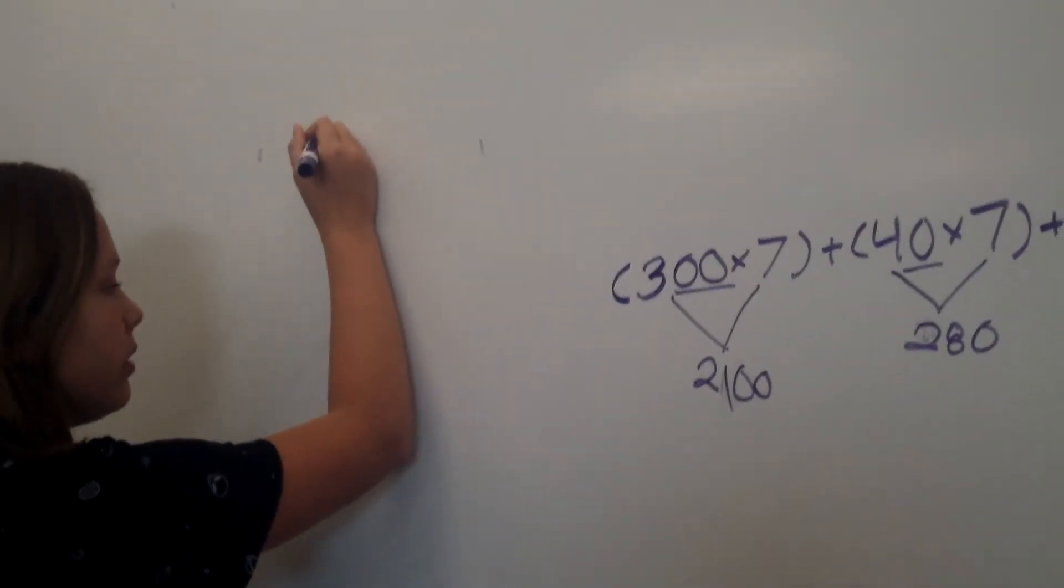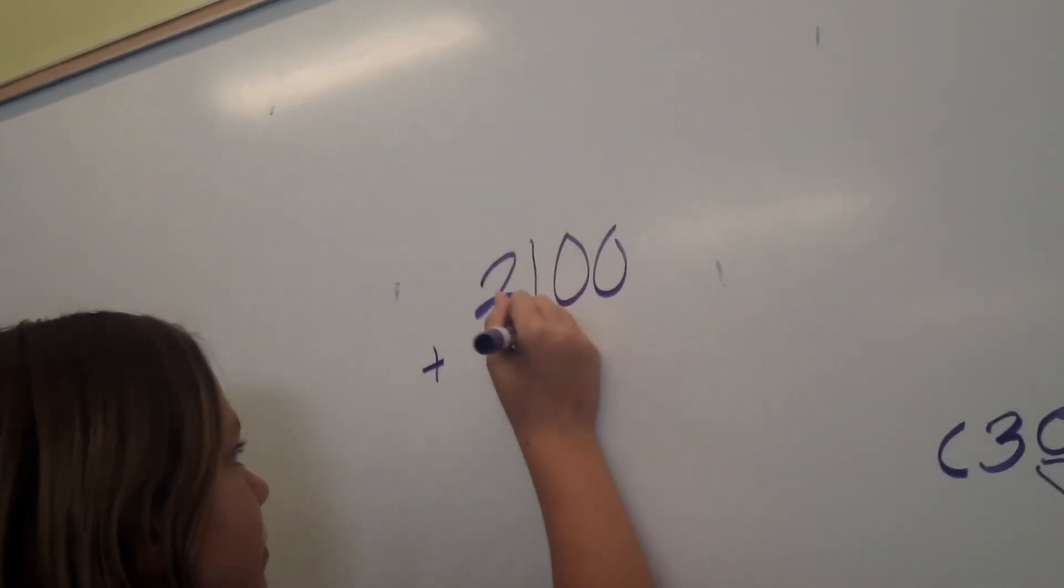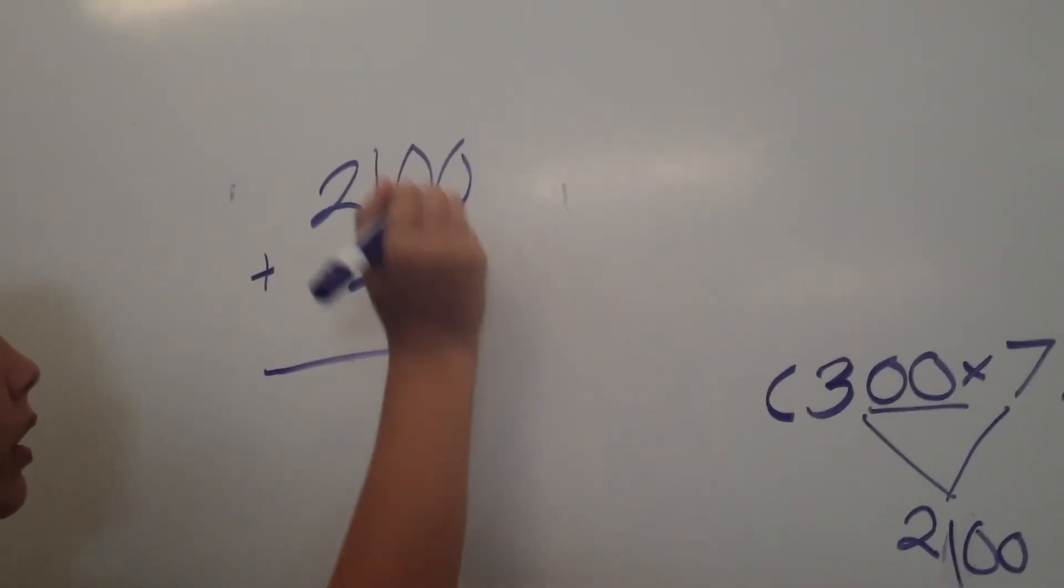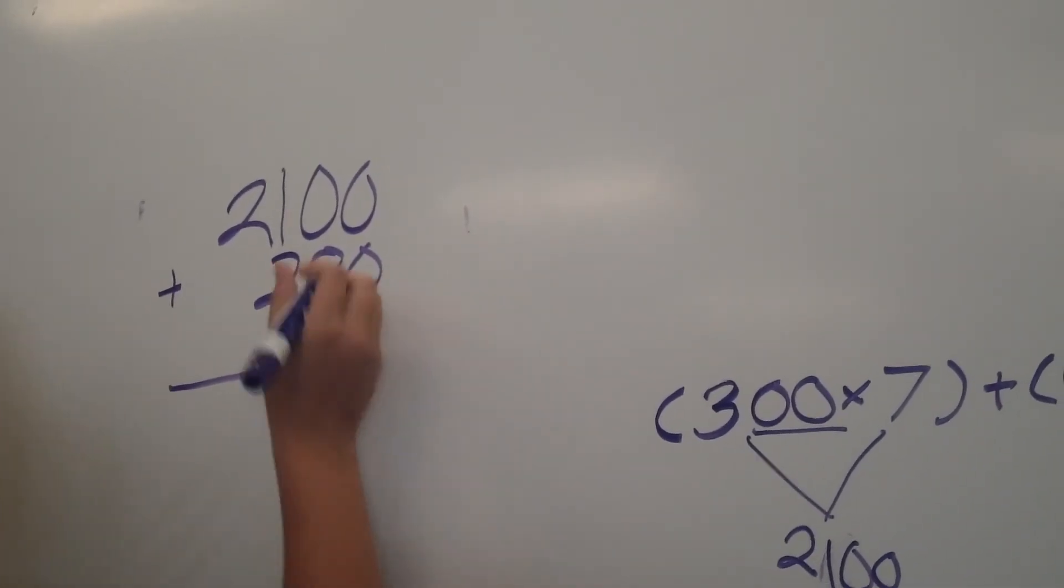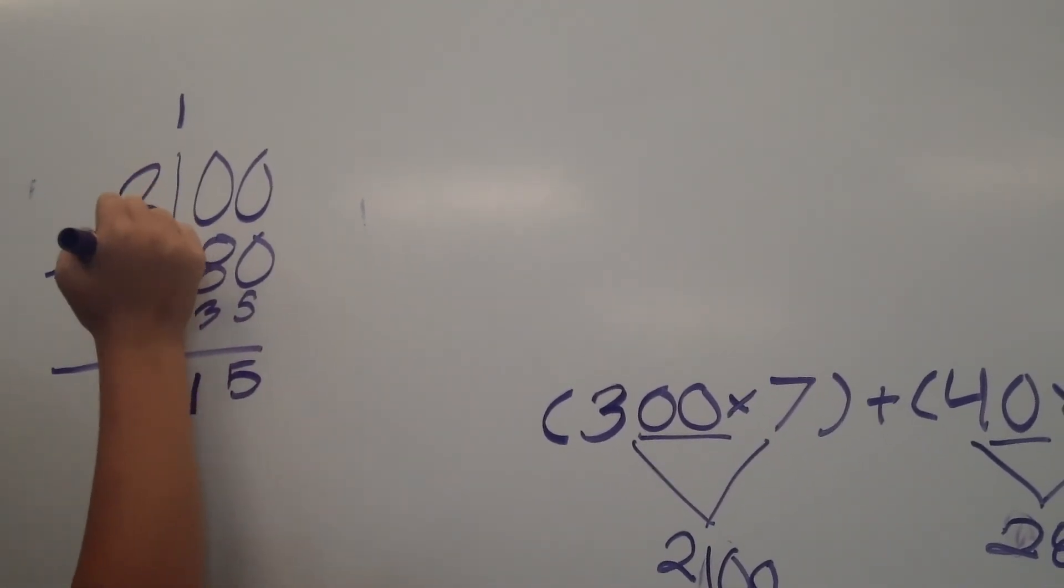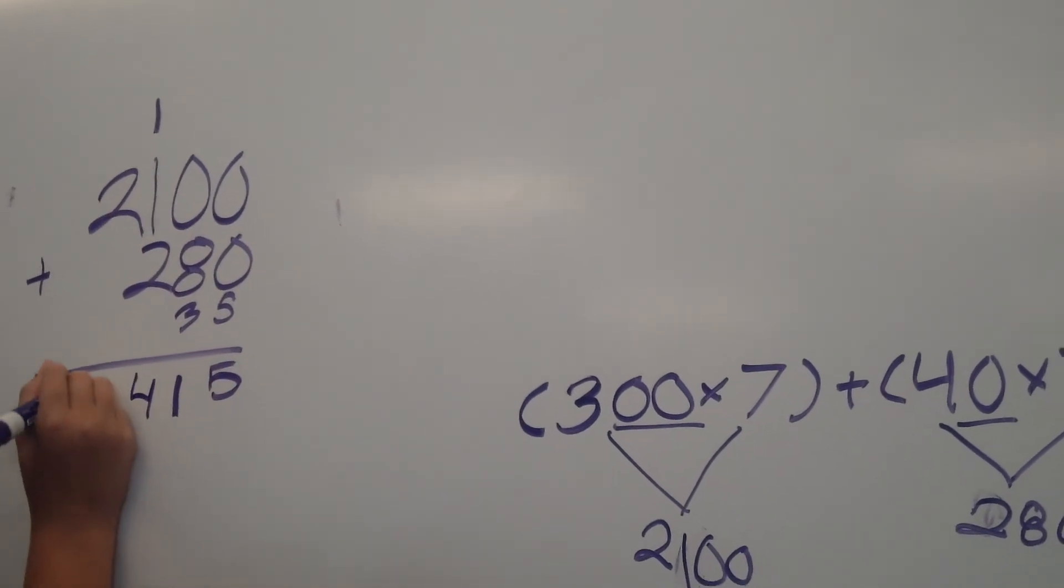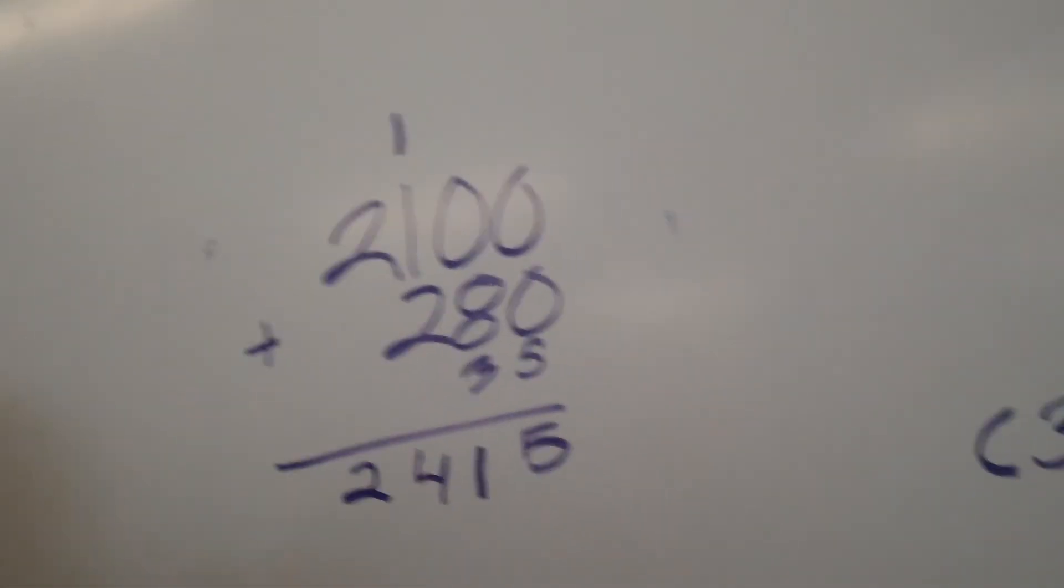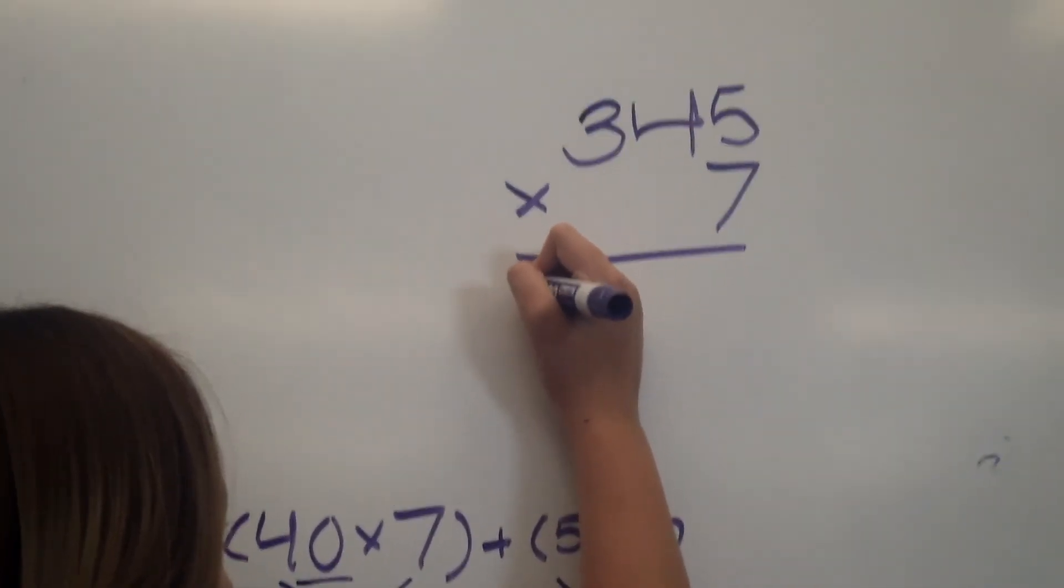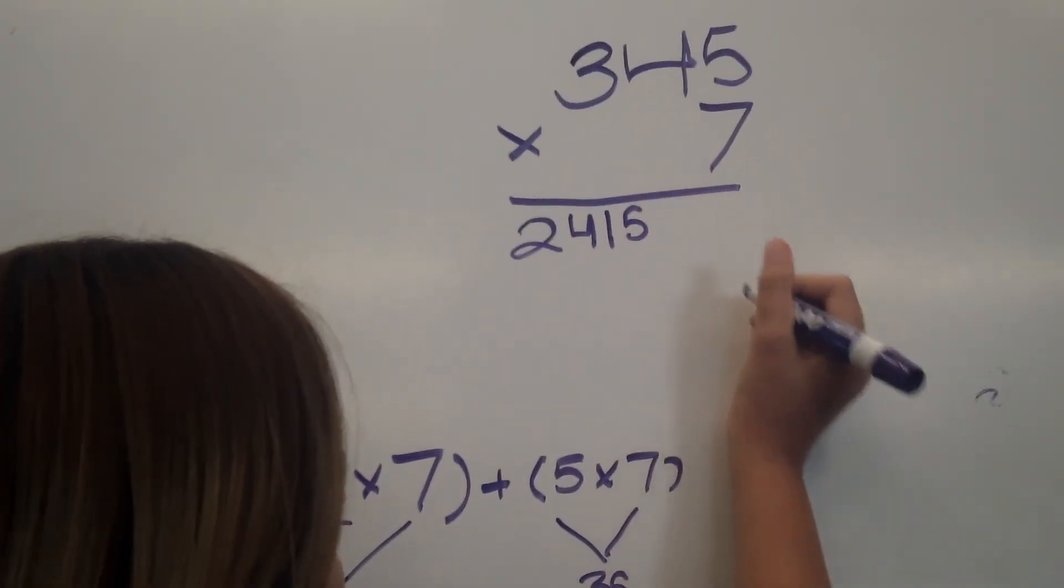And then you're going to take all the numbers and you're going to add them together. 280 plus 35. 5 plus 0 is 5. 8 plus 3 is 11. And then 2 plus 1, and 1 again, is 4. So when you get to the very end, you have the answer to your problem. And for my problem, the answer is 2,415.